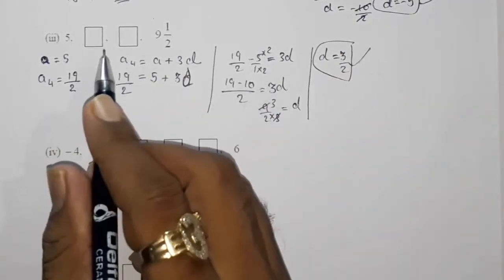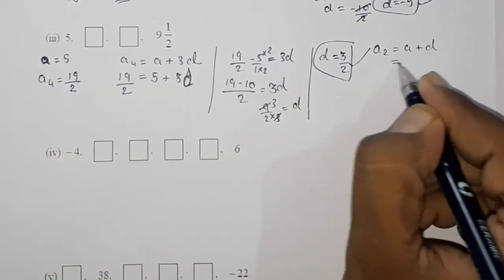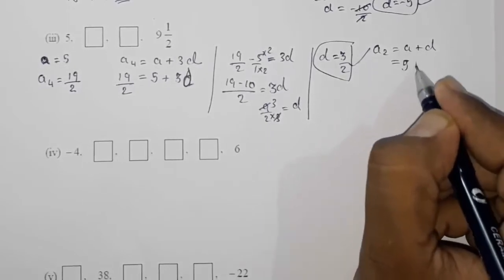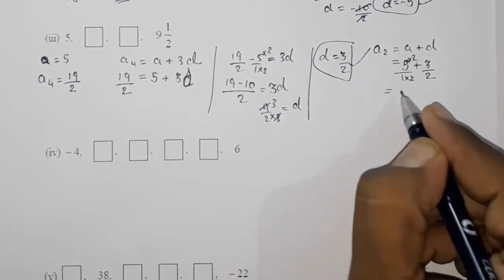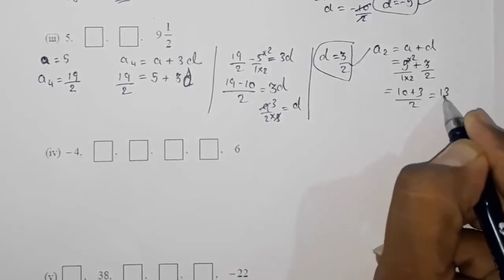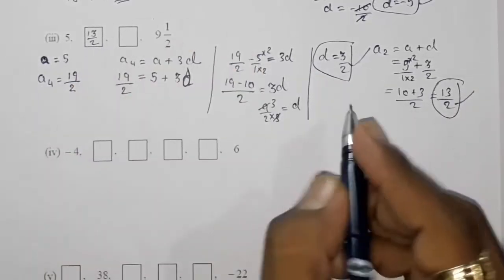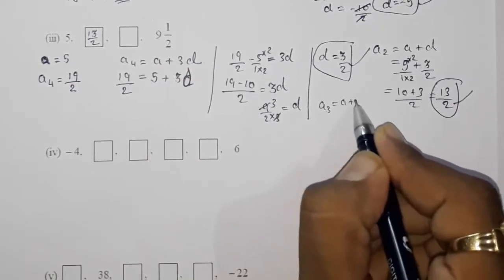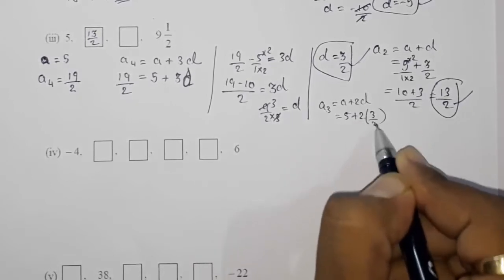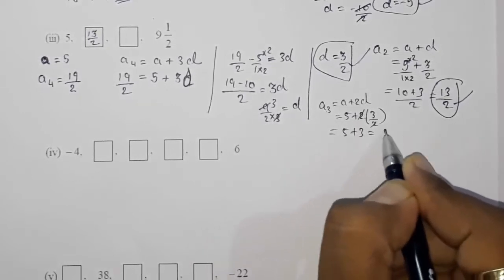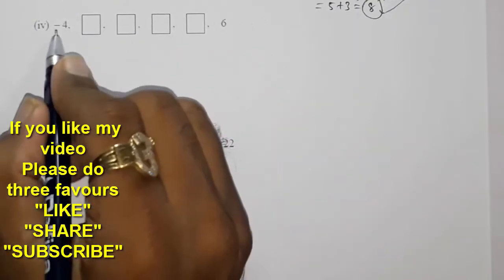Now we find a2 and a3. a2 = a + d = 5 + 3/2 = 10/2 + 3/2 = 13/2. And a3 = a + 2d = 5 + 2 × (3/2) = 5 + 3 = 8. So a2 = 13/2 and a3 = 8. Now moving to part four.